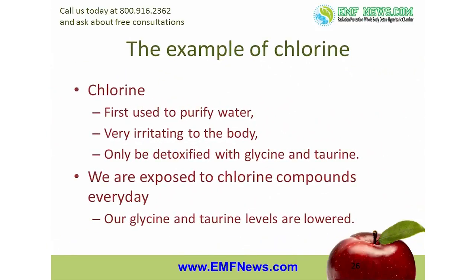Take chlorine for example. As a disinfectant, chlorine is one of the great public health success stories of the 20th century — when it was first used to purify water in the early 1900s, typhoid fever, cholera, and dysentery virtually disappeared from the US. But there is a price to pay for using it. Chlorine is very irritating to the body, so it must be detoxified, and the only way chlorine can be detoxified is with glycine and taurine. Since we are exposed to chlorine compounds with every glass of water we drink and every shower we take, it's easy to see how our glycine and taurine levels are lowered every day.